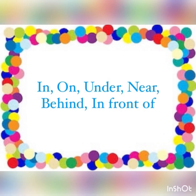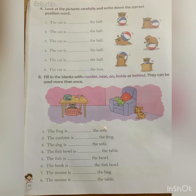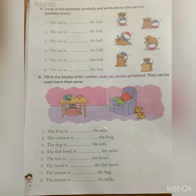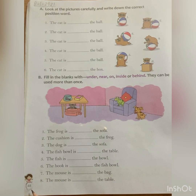In, on, under, near, behind, in front of — in saare words se hume pata lagta hai ki koi cheez, koi place, koi animal, ya fir koi thing kaha hai. So I hope ki aapko preposition achhe se samajh aagaya hoga. Now we'll be doing the exercises given on page number 48. Aage hum page number 48 pe jo exercises dee rakhi hain woh karenge.